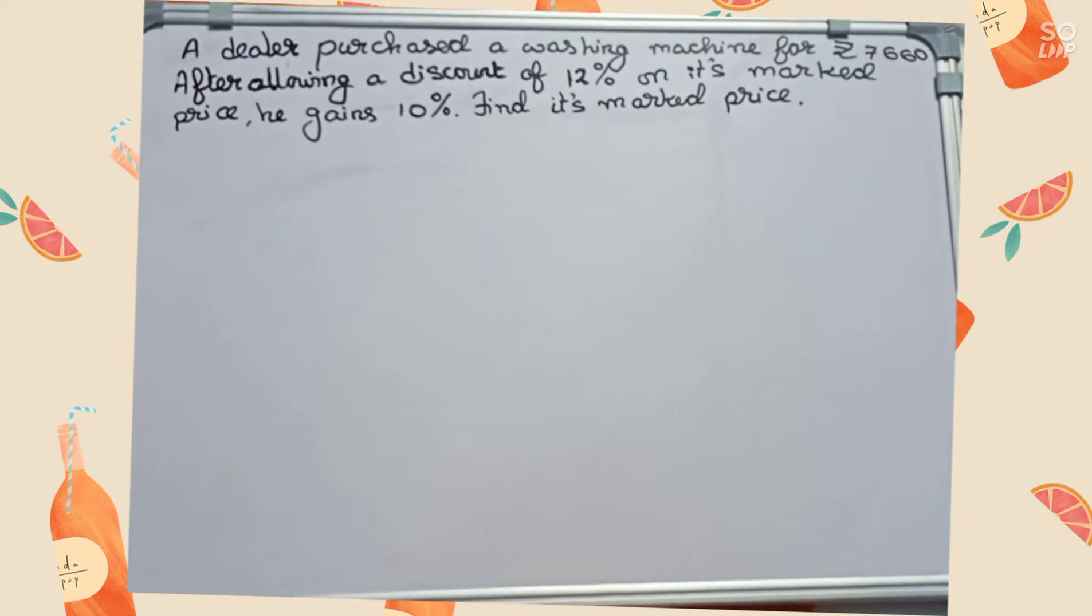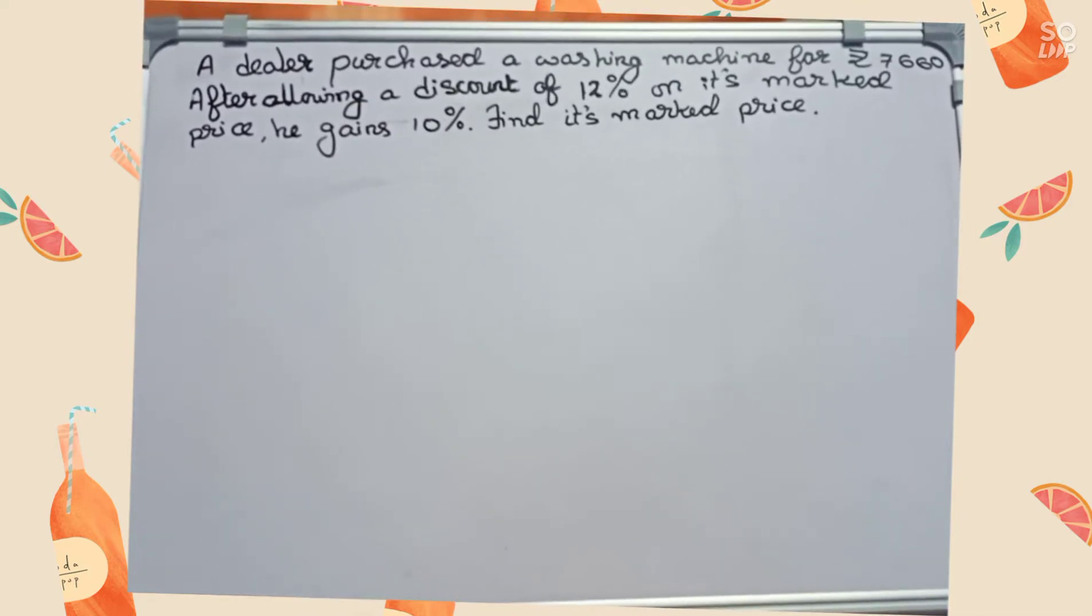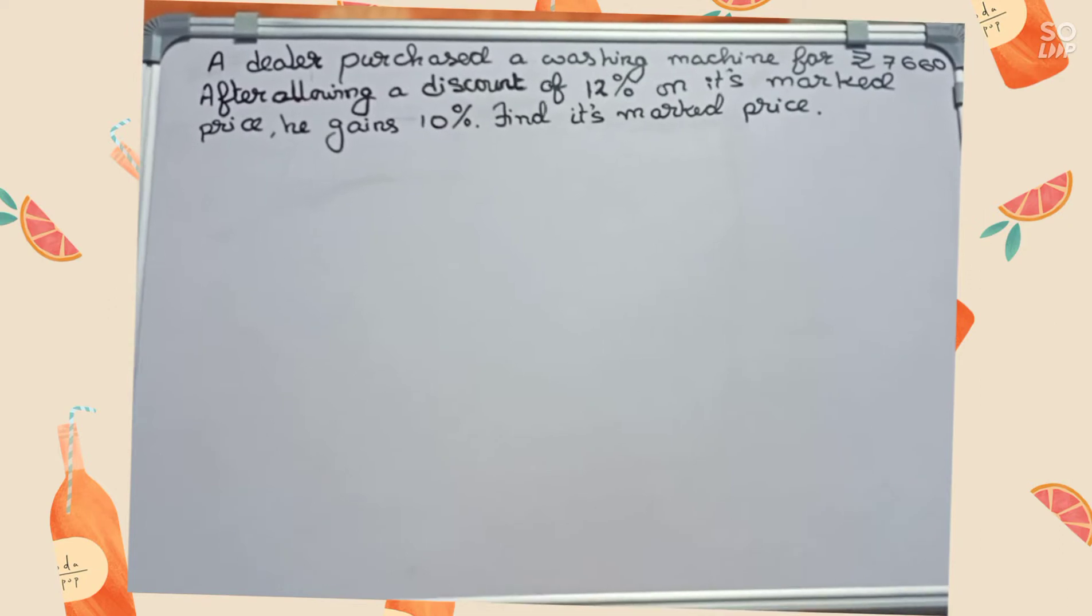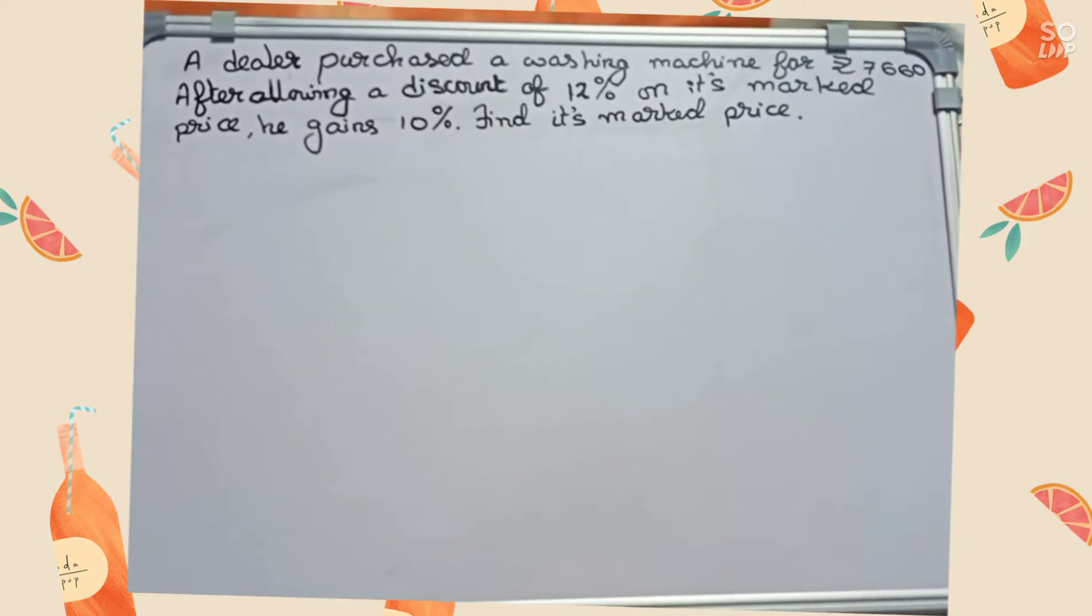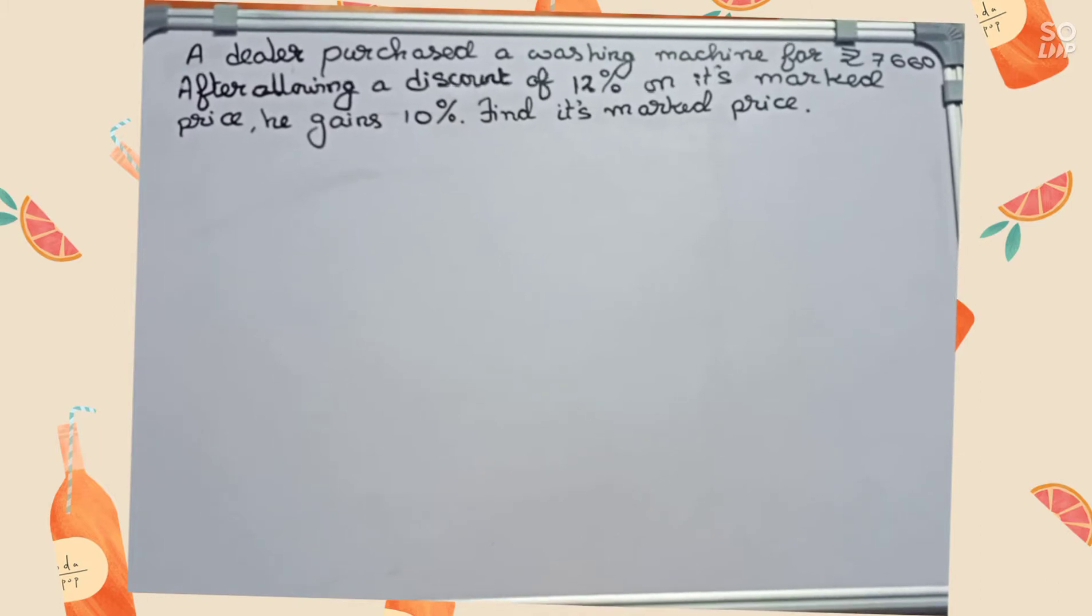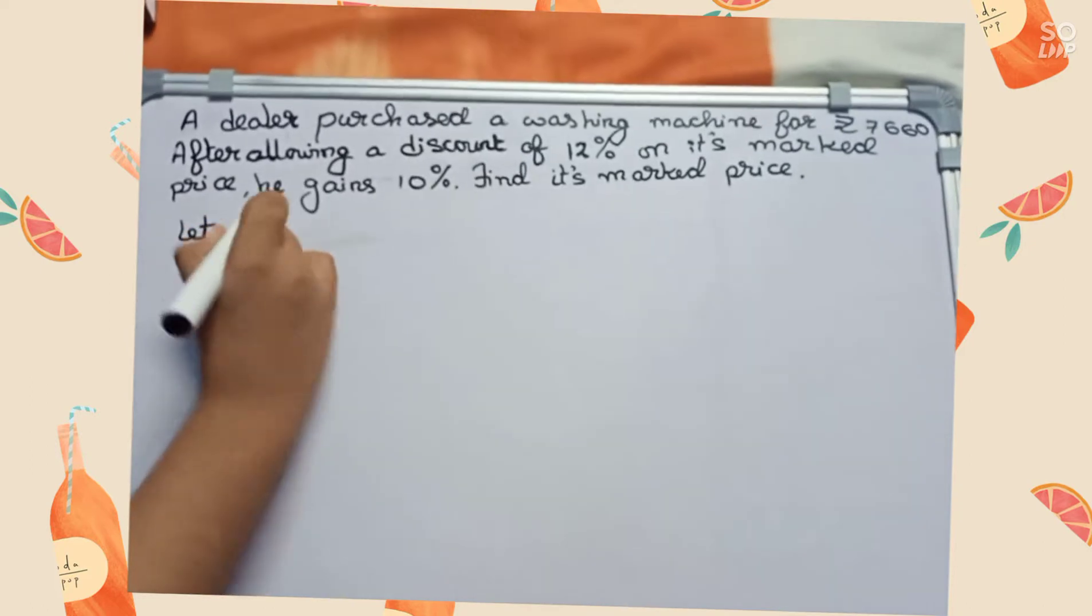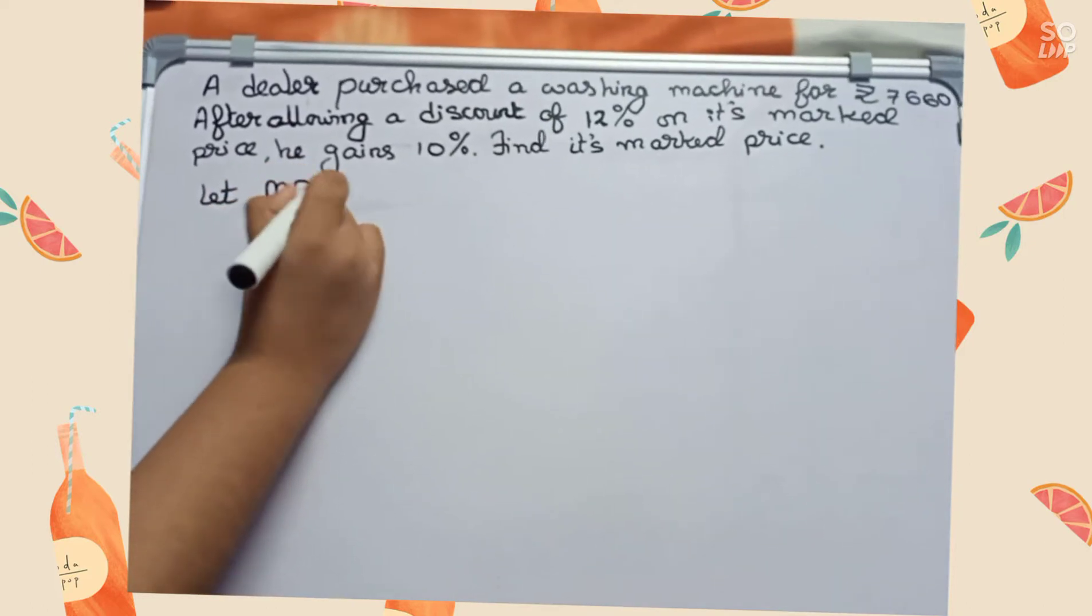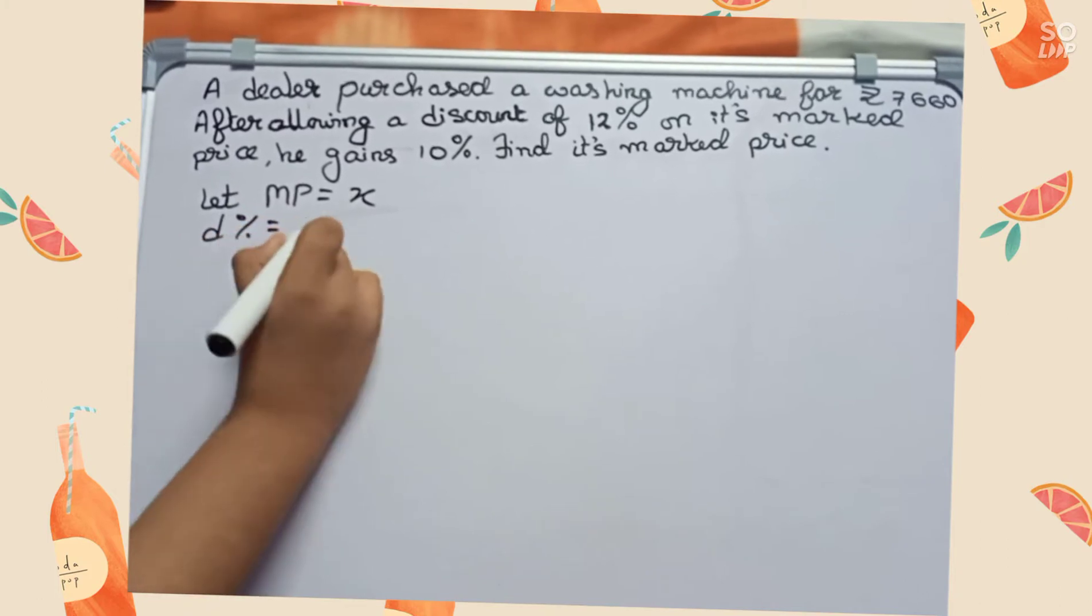Welcome to this video. In this video, the question is: A dealer purchased a washing machine for rupees 7660. After allowing a discount of 12% on its marked price, he gains 10%. Find its marked price. So let's start. We will first take MP equals x. Discount percentage equals 12%.